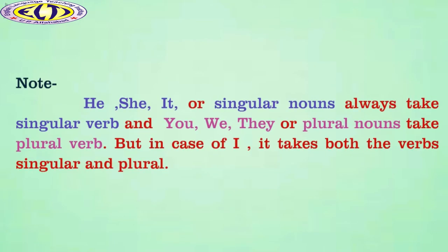Now, it is very important to know that he, she, it, or singular nouns always take a singular verb. And you, we, they, or plural nouns take a plural verb. But in case of 'I', it takes both verbs — singular and plural.